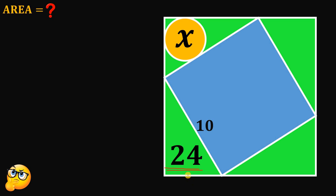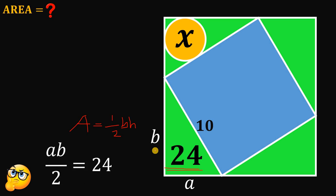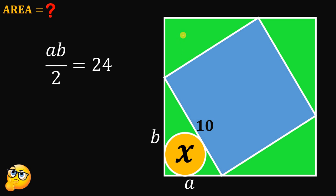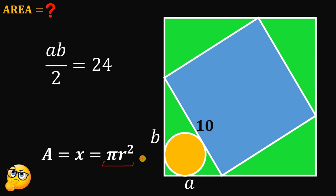So let's have the base be equal to A, and the height of this right triangle be equal to B. Using the area formula for a triangle — area equals one half times base times height — we can say that AB divided by 2 must be equal to 24. Now we can place the circle in this right triangle since all four are congruent. Our goal is to find the area of this circle, x, which equals pi r squared. So once we find the radius, we're done.